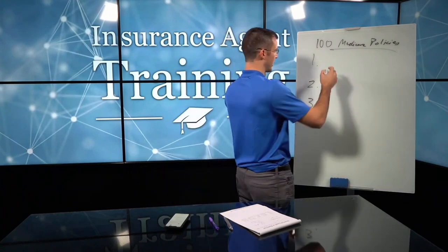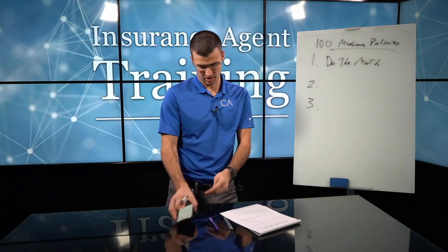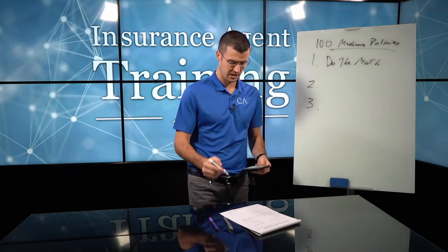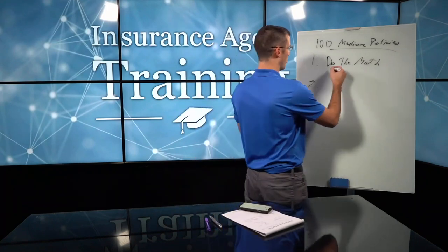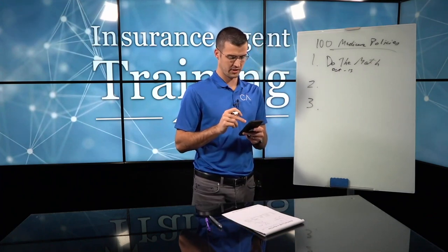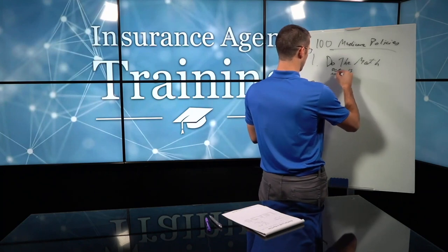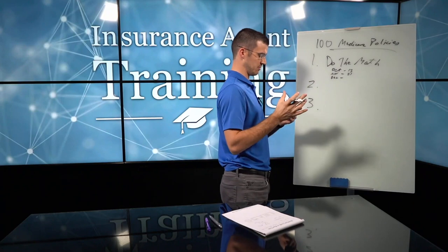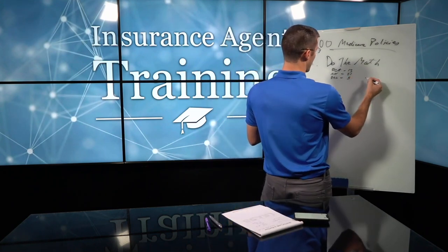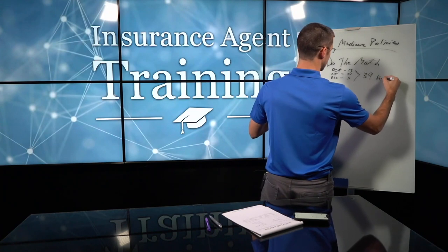So today we're going to talk about how to write 100. The first thing is: do the math. From October 15th through December 7th, you've got 13 business days in October, 21 in November, and another 5 in December — that's 39 business days total. You can also sell on weekends, but I'm looking at business days specifically.